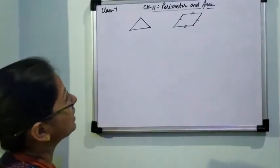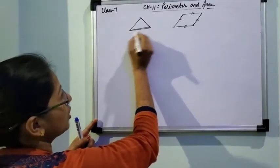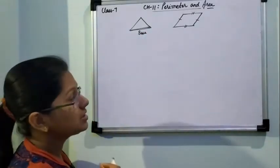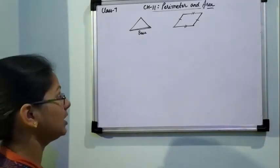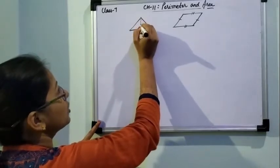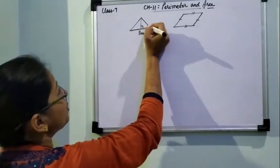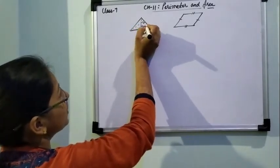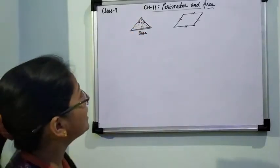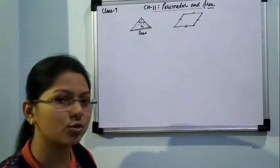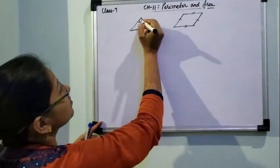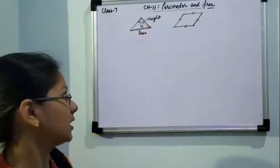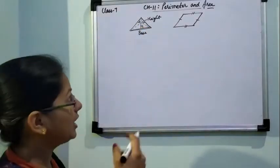In a triangle, the side lying on the horizontal is generally called the base. The height is always the perpendicular distance from the opposite vertex to the base. So height is the perpendicular distance from base to its opposite vertex. And according to which side we take as base, the height will also change.